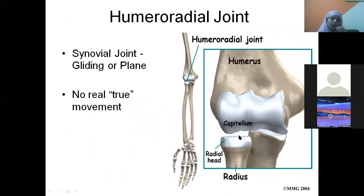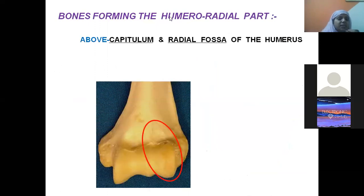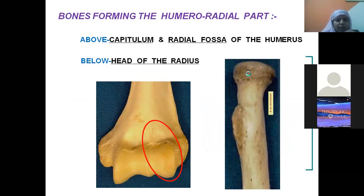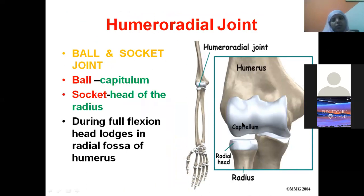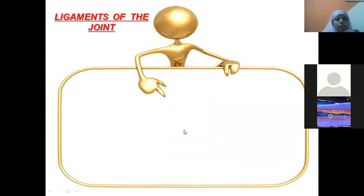Movement is more facilitated at the humero-ulnar joint due to the hood-like trochlea. In the humero-radial joint, above is the capitulum and radial fossa, and below is the head of the radius. During flexion, the head of the radius comes and fixes in the radial fossa. Now let us discuss the ligaments: the outermost covering is the capsular ligament, lined inside by the synovial membrane, with ulnar collateral ligament medially and radial collateral ligament laterally.